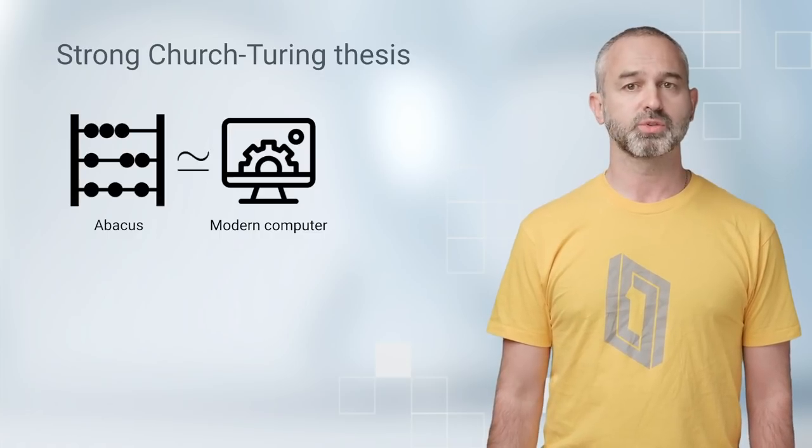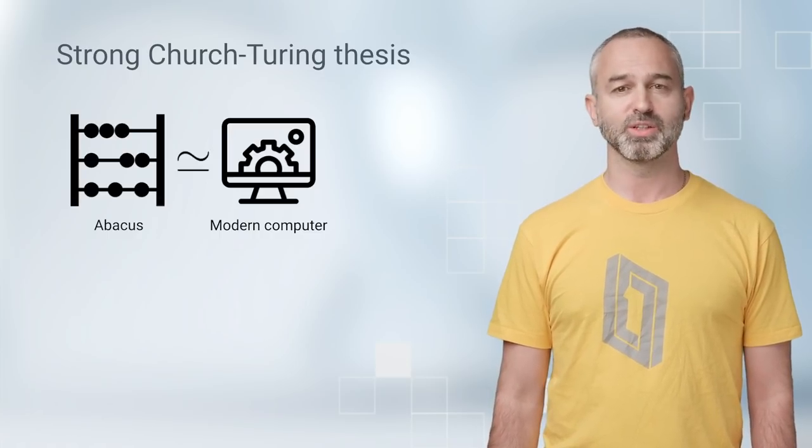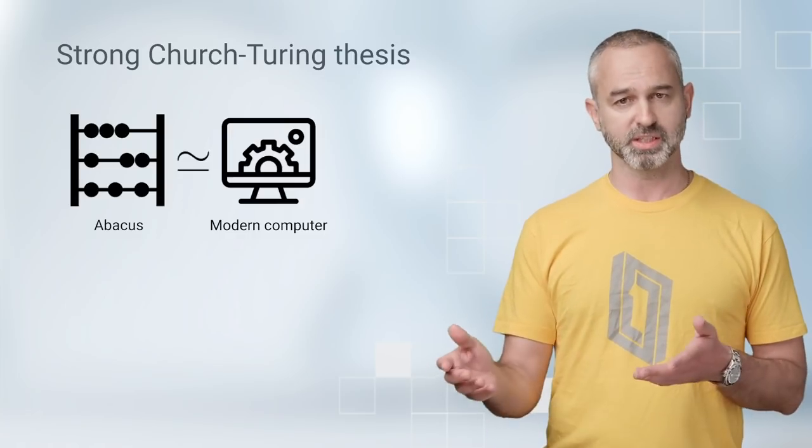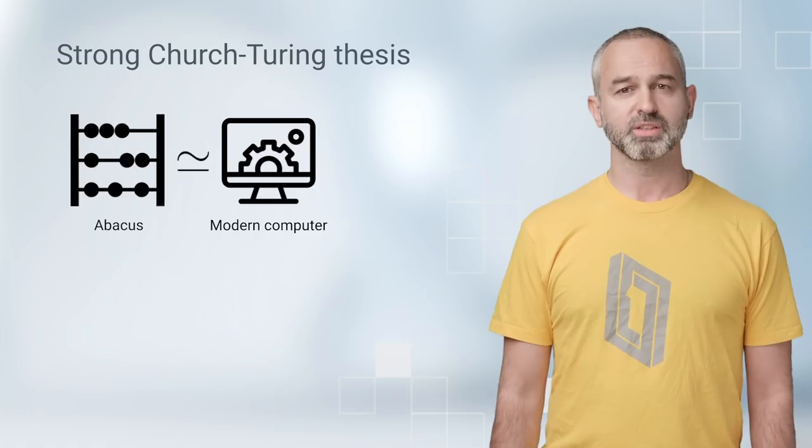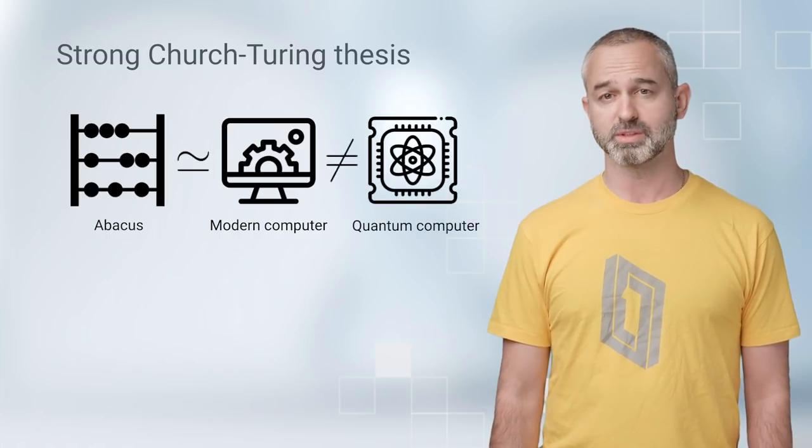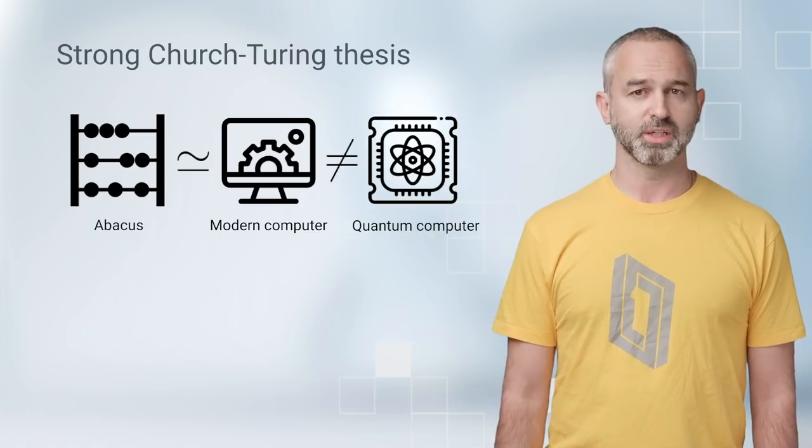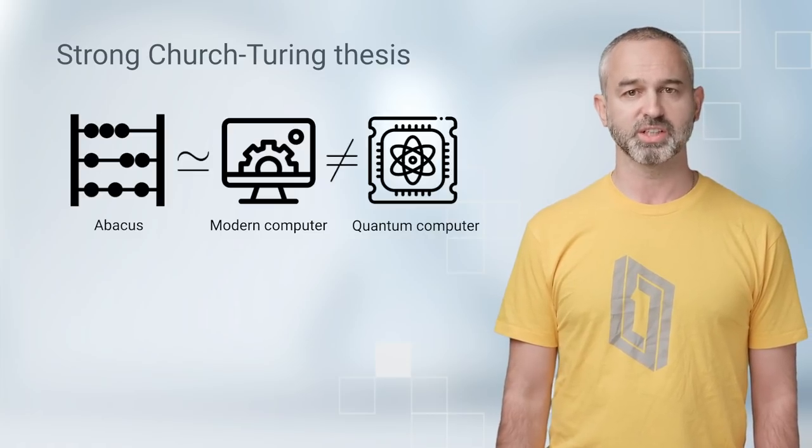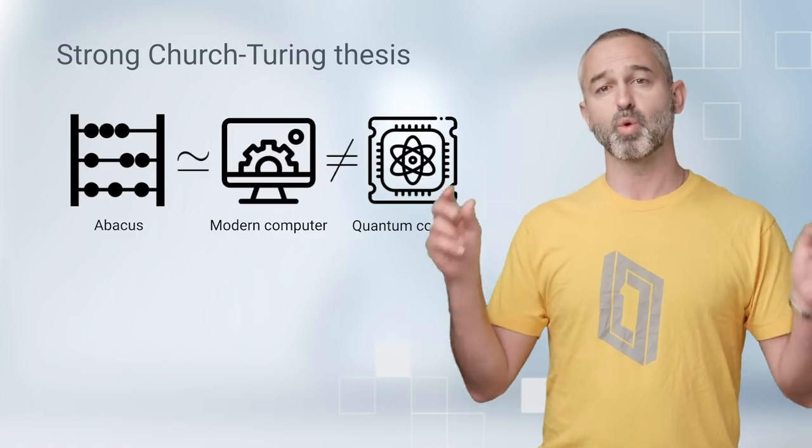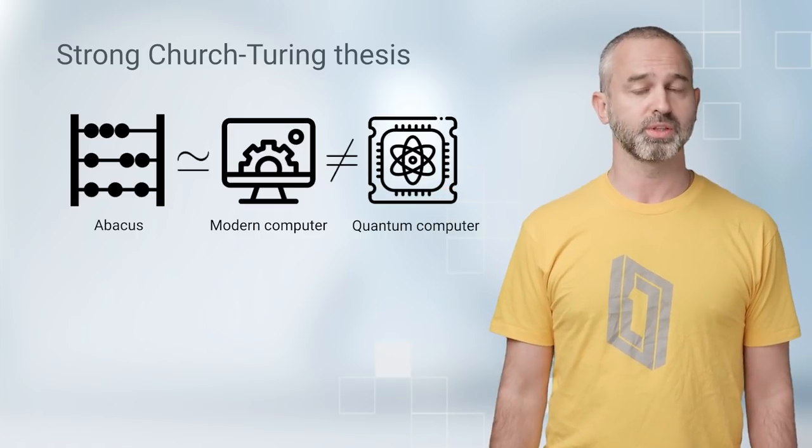The Strong Church Turing thesis says that all universal computers are equivalent in this way and can simulate each other efficiently. But according to quantum computing, the Strong Church Turing thesis is false, and quantum computers can solve some problems exponentially faster than other universal computers. So what we're trying to do is kind of breaking the Strong Church Turing thesis.